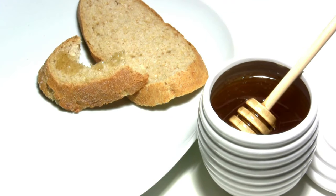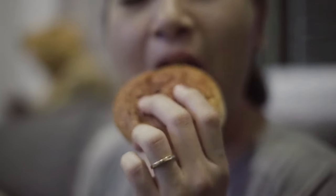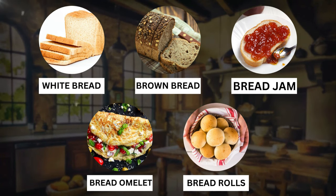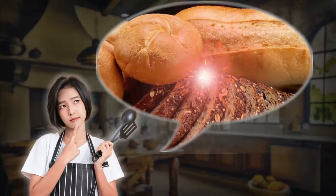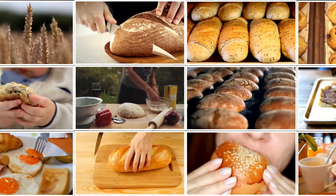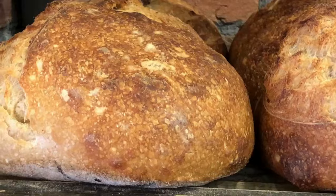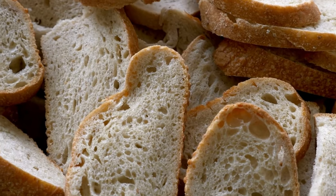Nowadays, bread is one of the most commonly used foods around the globe. Everyone is consuming it in various forms — from simple white bread to brown bread, bread jam, bread omelets, bread rolls and many others. But the question arises: where did it actually come from? How did it become one of the most commonly used foods? What are the differences between the various types of bread? How does it compare to other food items? So today we are going to embark on a fascinating journey through time to explore the evolution of one of the world's oldest and most beloved foods.